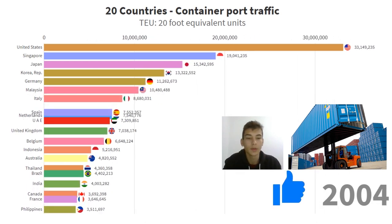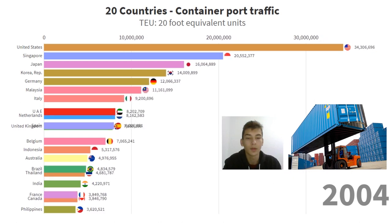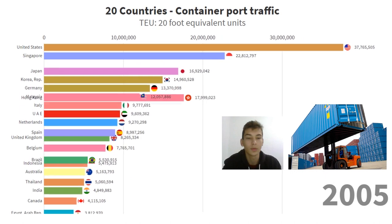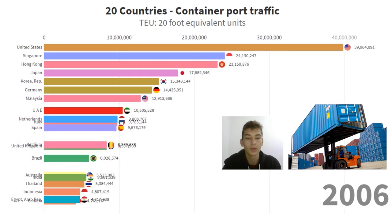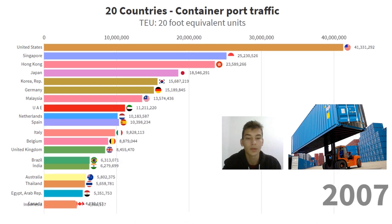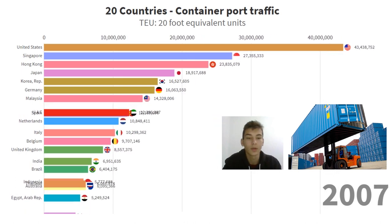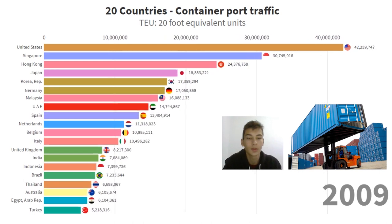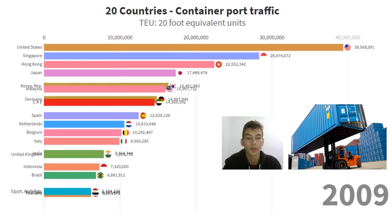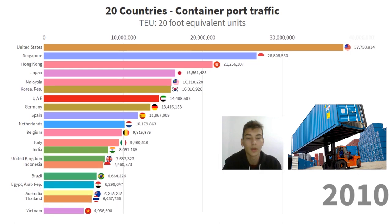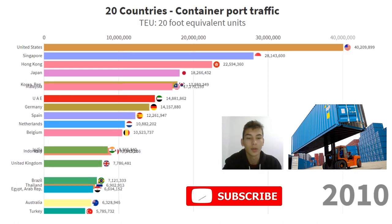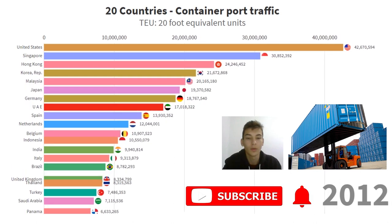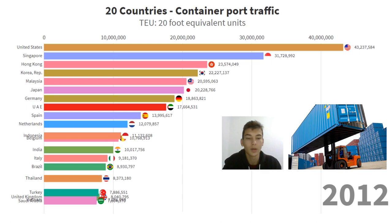Port container traffic measures the flow of containers from land to sea transport modes and vice versa, in 20-foot equivalent units. The standard size container data refers to coastal shipping as well as international journey transshipment. Movement traffic is coded as the two-wall lift at the intermediate port, and also off-land and again as the outboard lift, and includes empty units.